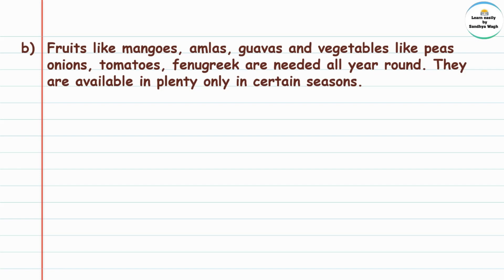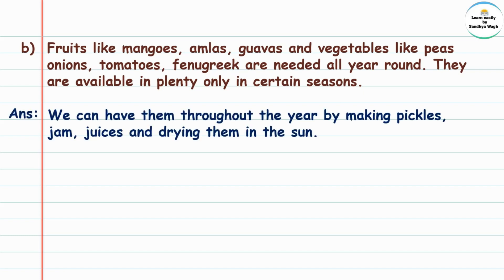Answer: We can have them throughout the year by making pickles, jams, juices, and drying them in the sun. From these fruits, we can make pickles and jams. For vegetables like peas, we can dry them in the sun. Onions can be made into powder, tomatoes into sauce or powder, and fenugreek can also be dried. This way, we can use seasonal fruits and vegetables throughout the year.